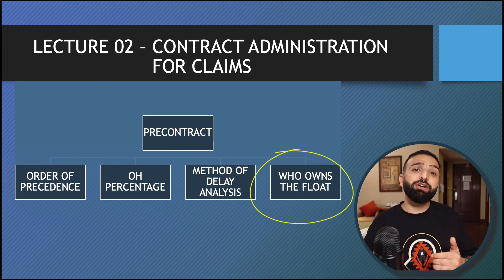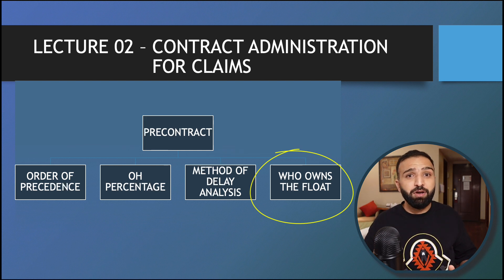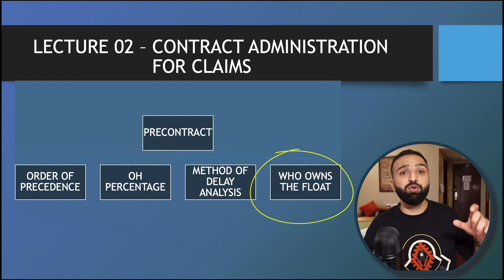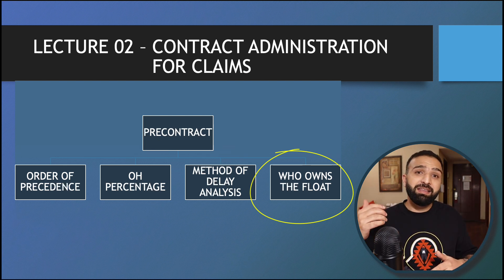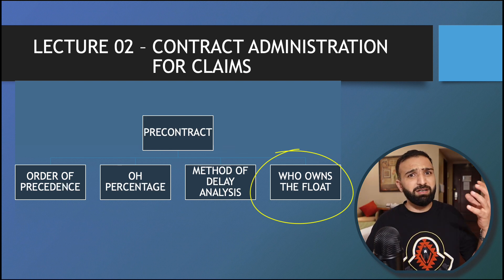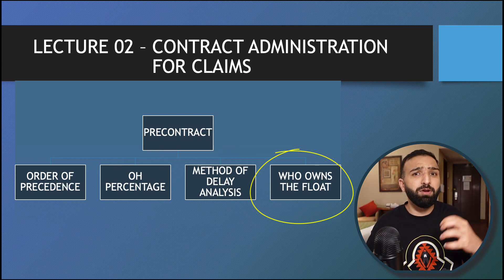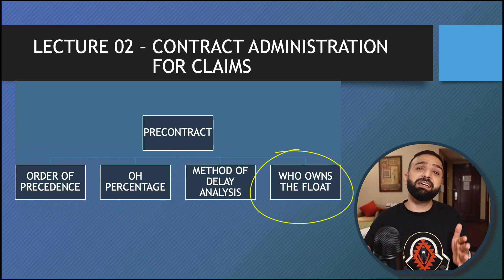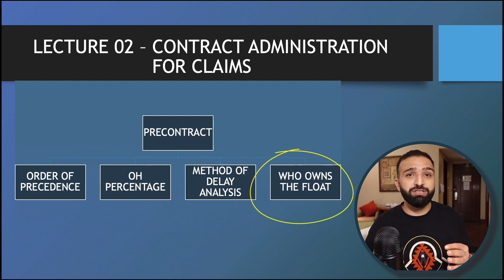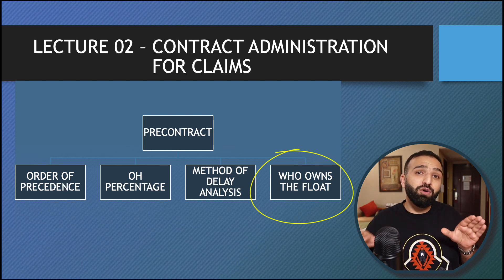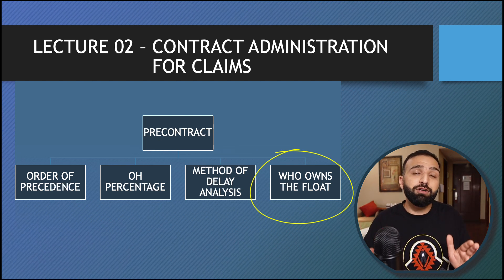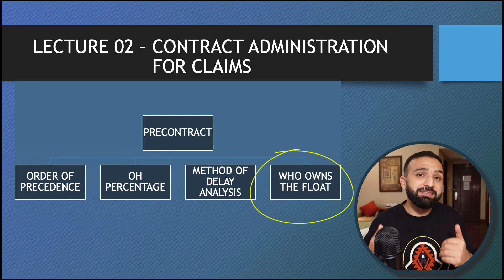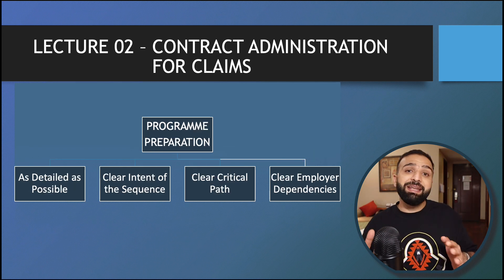The fourth important thing that needs to be implemented in the contract is to define who owns the float. This is often a point of conflict because you are denied claims because the engineer thinks you have the float, and the engineer and employer consume all of it, while you argue that the program is yours so the float belongs to you. This is an endless cycle that happens in almost every project. If it is defined how the float is meant to be used, it will resolve a lot of conflict and make our lives easier as claimants.